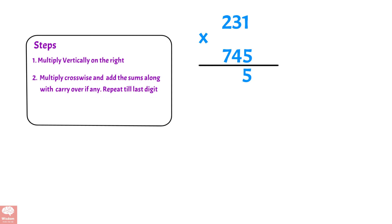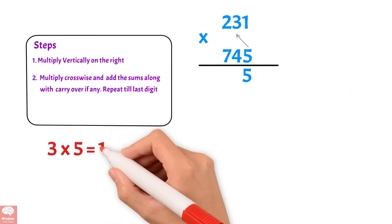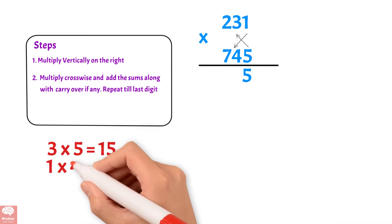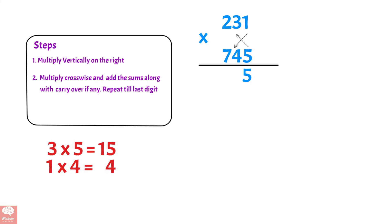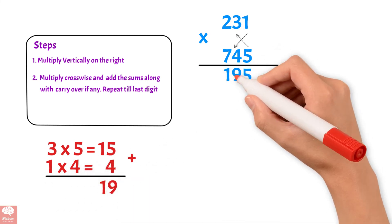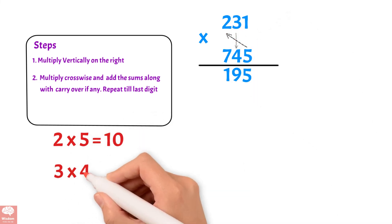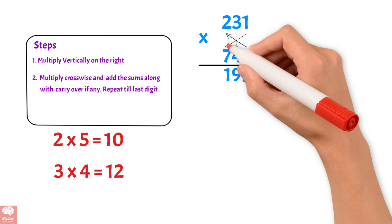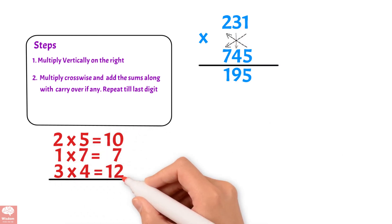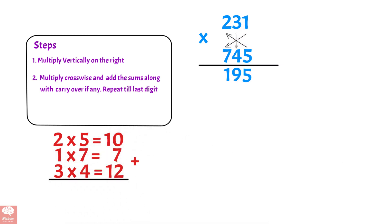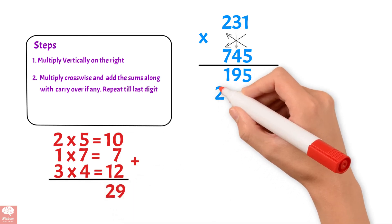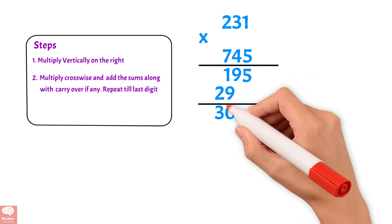Repeat till the last digit. 3 times 5, we get 15. 1 times 4, we get 4. Adding 15 plus 4, we get 19. Then, 2 times 5 is 10, 3 times 4 is 12, 1 times 7 is 7. Adding 10 plus 12 plus 7, we get 29. Adding the carryover 1 to 29, we get 3095.